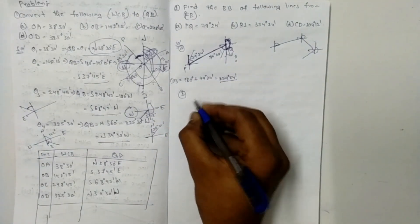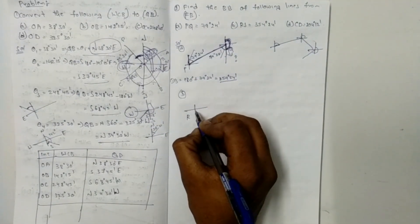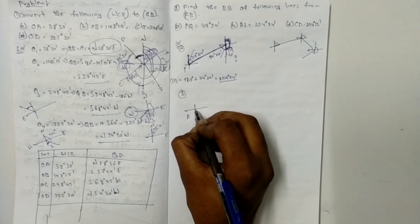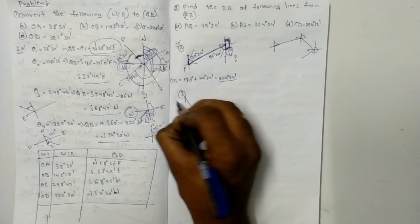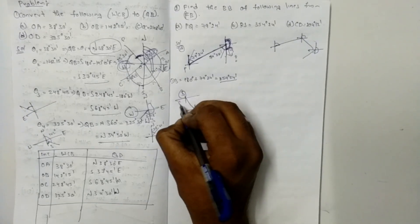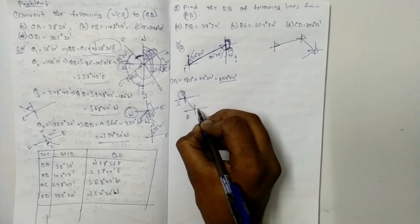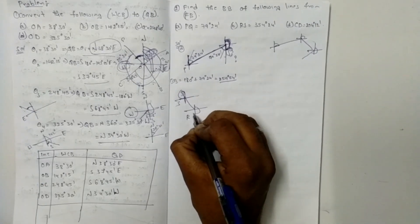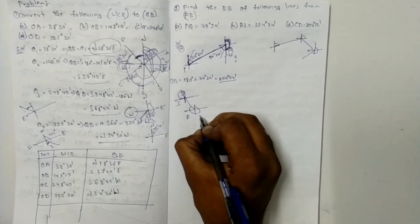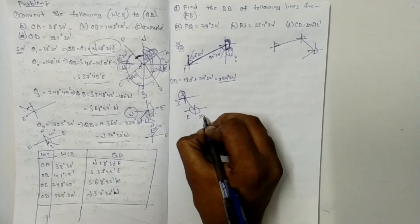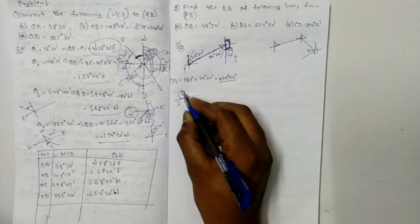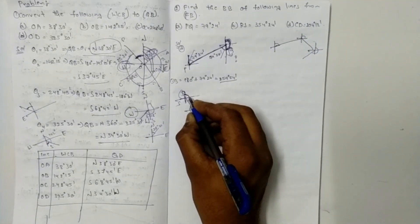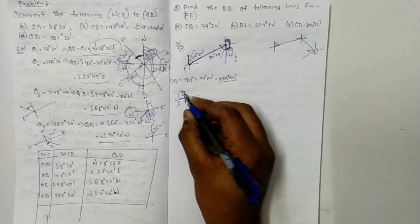Next, RS line: fore bearing is 354 degrees. Since 354 degrees is greater than 180 degrees, the back bearing equals 354 degrees minus 180 degrees.